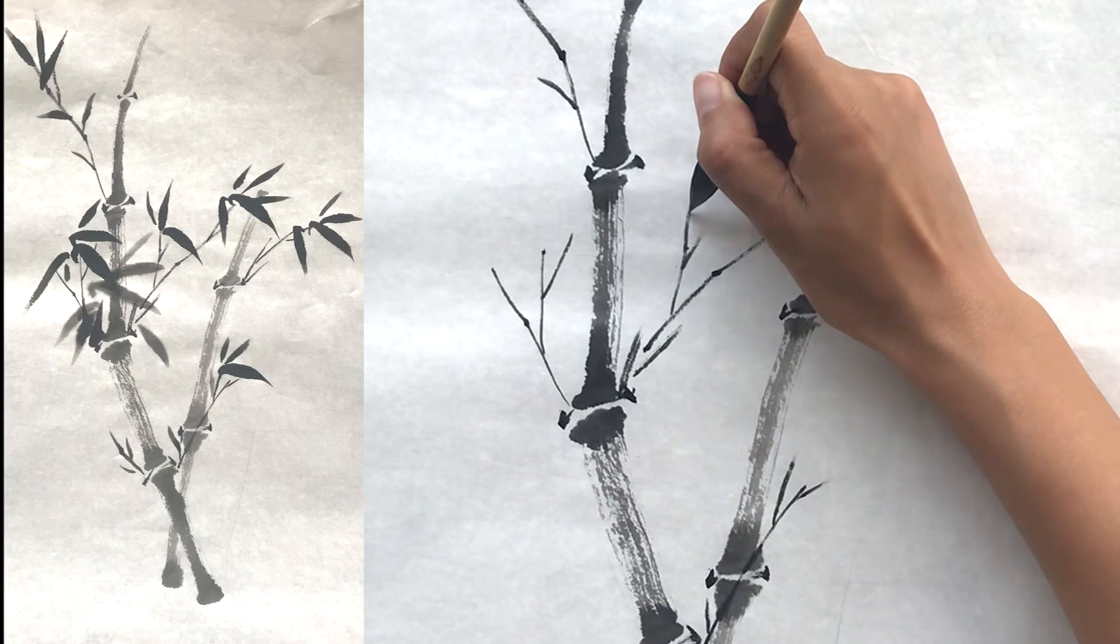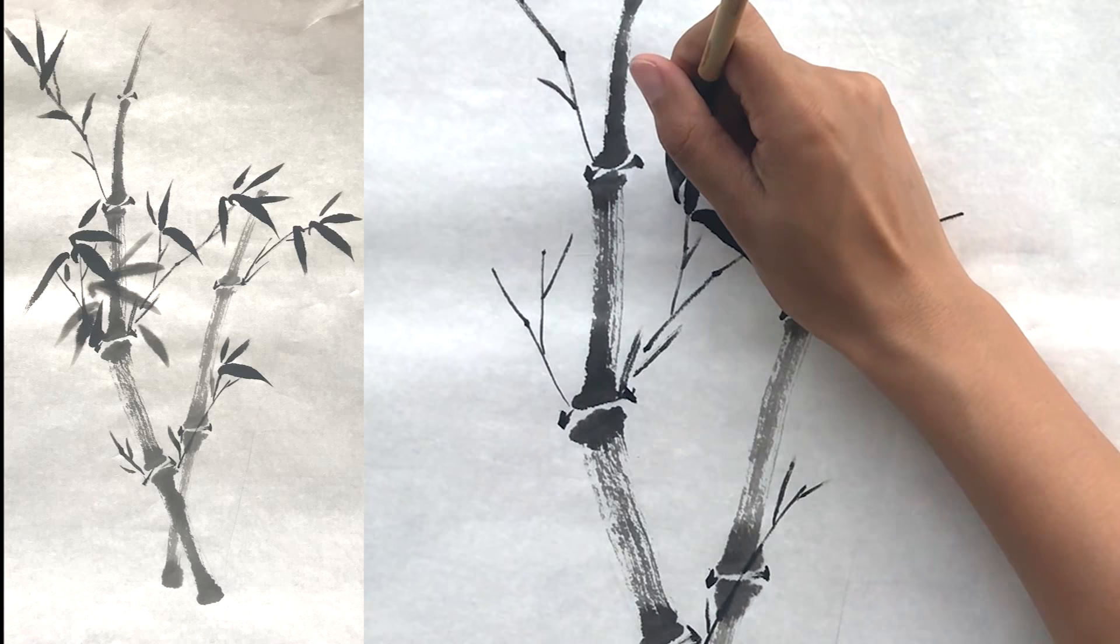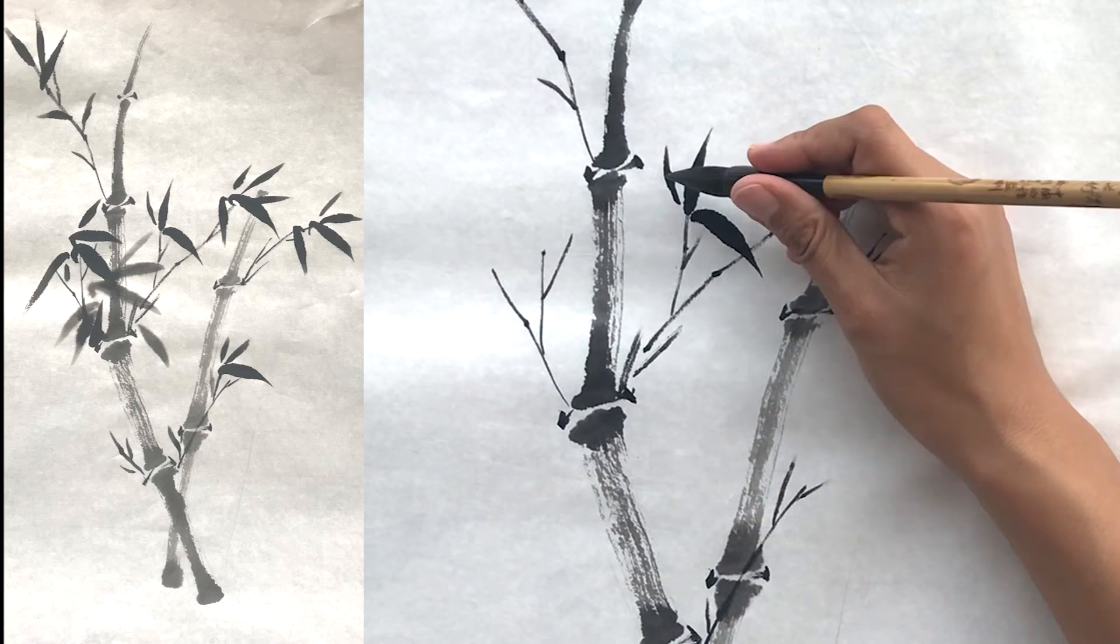Then paint the leaves. Press the brush slowly, lifting after you pass the middle of the leaf.